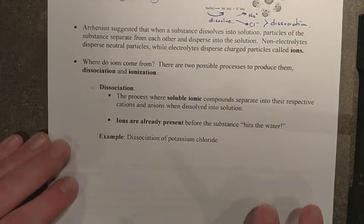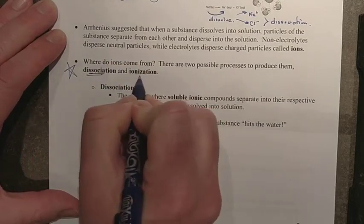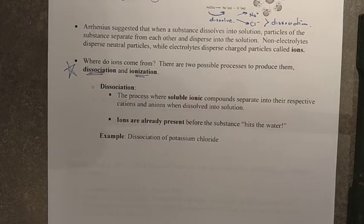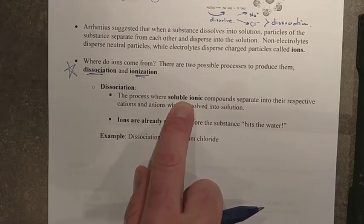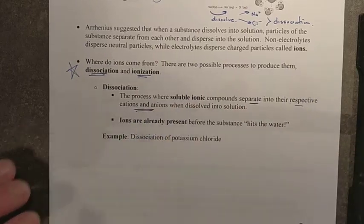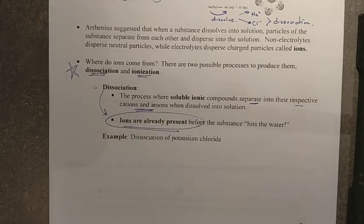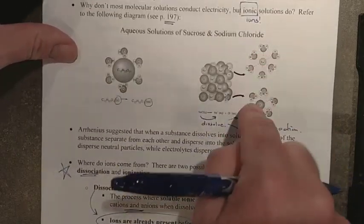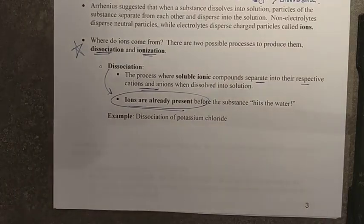So there are two ways in which we can produce these ions, and these are two important terms that you need to know. One is called dissociation, the other one is ionization. Both give us ions in the end, it's just how we get them. So, dissociation. This is the process by which a soluble, dissolvable ionic compound separates into its respective cations and anions. In other words, in dissociation, the ions are already present before we dissolve that substance. It's just the process of dissolving it separates out those individual ions and makes for us the ions in solution that will give us our conductive solution.